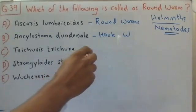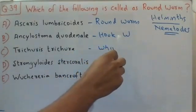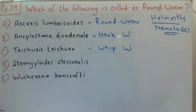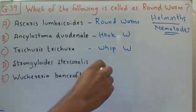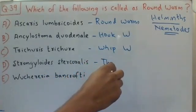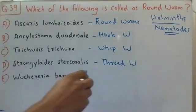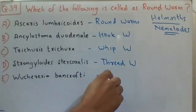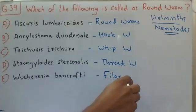Whereas Trichuris trichiura is the scientific name of whipworm. Coming to D choice, Strongyloides stercoralis is the scientific name of threadworm. Coming to E choice, Wuchereria bancrofti is the scientific name of the filarial worm, which causes filariasis.